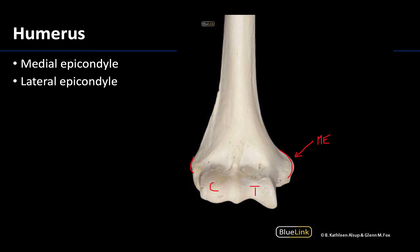The ulnar collateral ligament will attach here supporting the elbow region, but also importantly most of those superficial muscles of the anterior or flexor compartment of the forearm will have their proximal attachment here — that's why it's so large. One other thing to note: the ulnar nerve will travel just posterior to the medial epicondyle, so when you hit your 'funny bone,' you're really pinging your ulnar nerve in this general area.